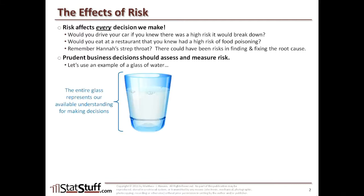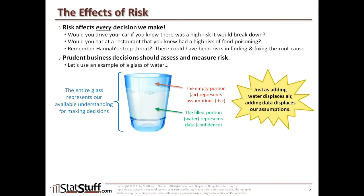Let me give an example using a glass of water. The entire glass represents all available understanding — all the information that might help us make a decision. The air where the water isn't filled up represents assumptions or risk, whereas the water portion — the filled part — represents the data or level of confidence we have, because we have some information filled up in that glass. Just as adding water displaces the air, when we add data and relevant information, that displaces our assumptions, and by doing so it helps mitigate the risks behind those assumptions.